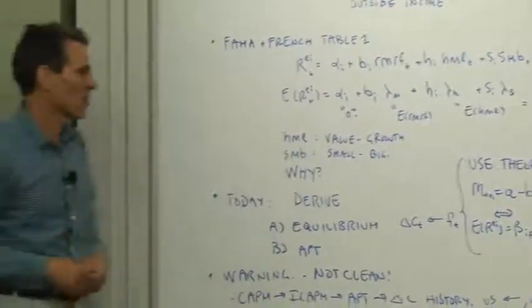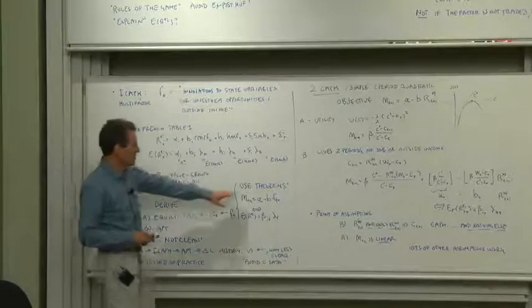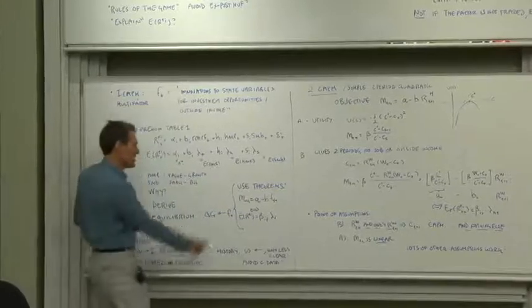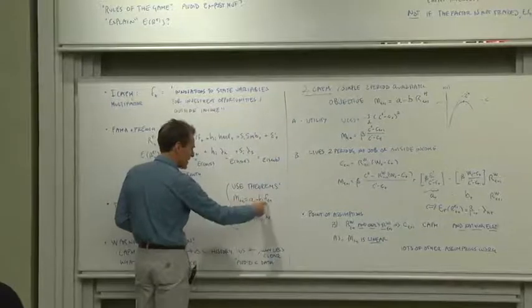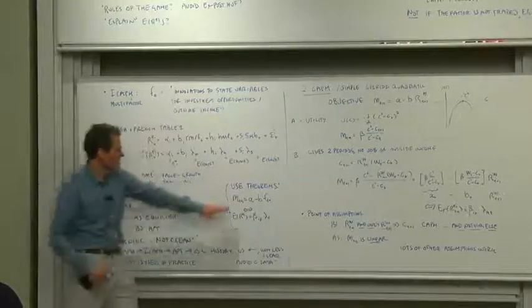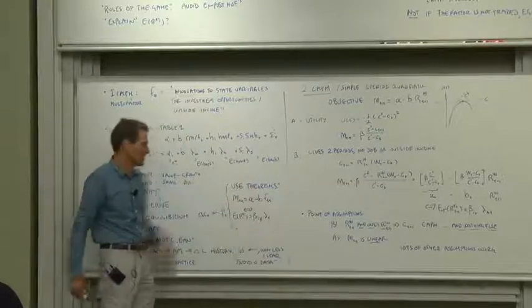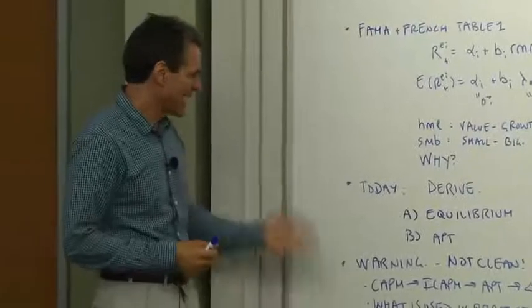We will use the representation results from the last few weeks. In the last few weeks, we've shown that a discount factor which is a linear function of the factor means expected returns are linear in betas. So once I get here, I'm done, and you know how to fill in the steps to represent it in alternative ways. That'll save us a bunch of algebra.